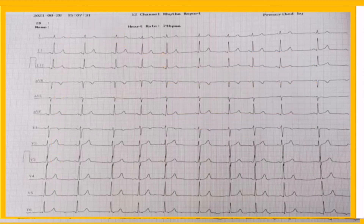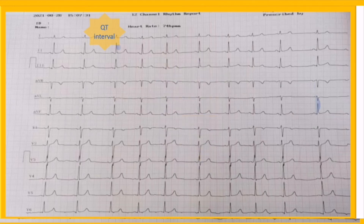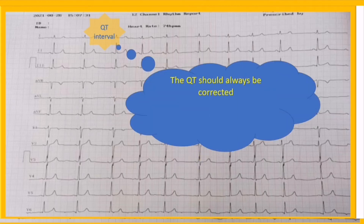The next step is QT interval. The QT interval is made up of the QRS complex, ST segment, and T wave. It is measured from the very beginning of the QRS complex to the end of the T wave, and represents the time elapsed between ventricular depolarization and repolarization. Since the QT interval is dynamic and changes with heart rate, it's essential to correct our initial calculation based on heart rate.